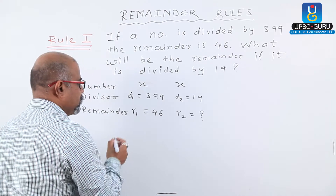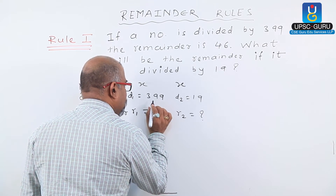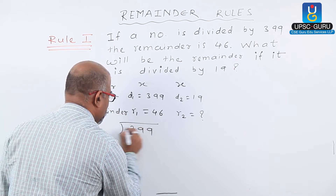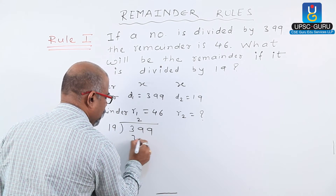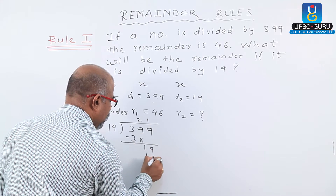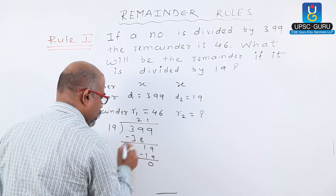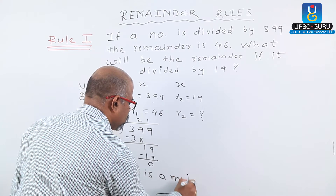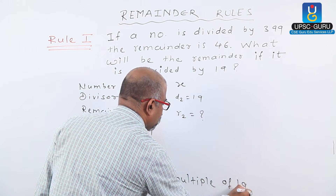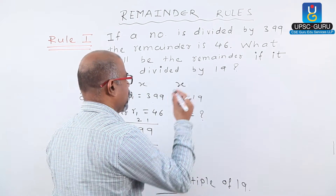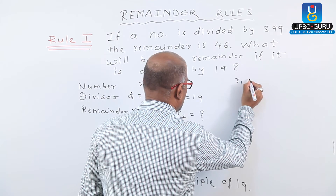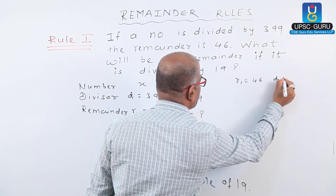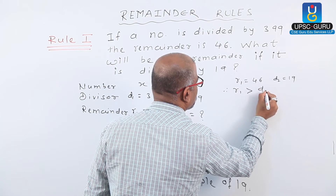By rule number one, check whether D1 is a multiple of D2 or not. 399 divided by 19: 19 times 2 is 38, remainder 1; 19 times 1 is 19, remainder 0. Therefore 399 is a multiple of 19. Second, check whether R1 is greater than D2 or not. R1 is 46 and D2 is 19, therefore R1 is greater than D2.